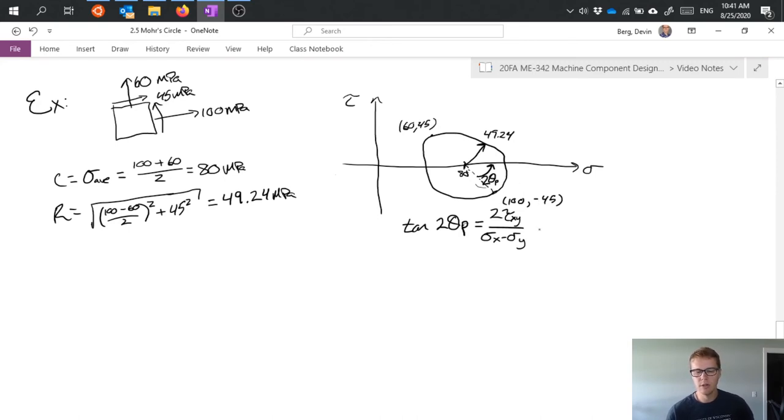So then I'm getting the angle based on this large triangle that I would inscribe in the circle. So taking that geometry I say okay 2 times 45 over 100 minus 60. And I don't know what that works out to be I actually don't have that worked out in my head or on my notes.